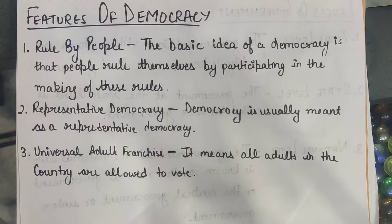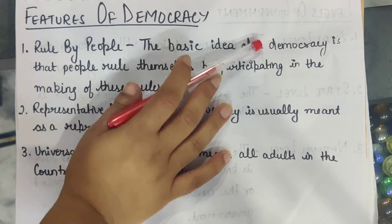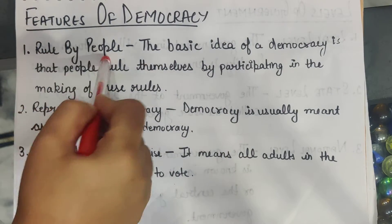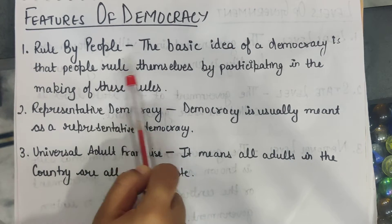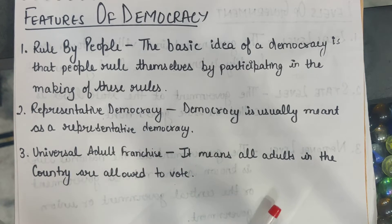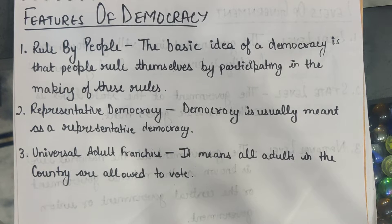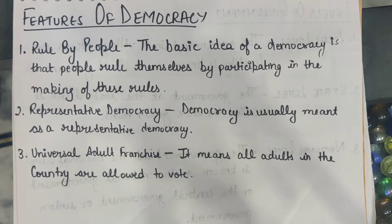Why only the features of democracy? You live in India and all of you know that India is a democratic country. So we are going to read about the features of democracy. The first one is rule by people. The basic idea of a democracy is that people rule themselves by participating in the making of these rules. The features are going to help us understand democracy in a better way.